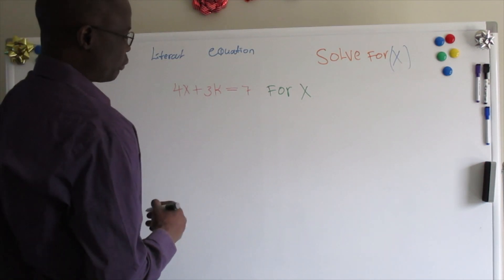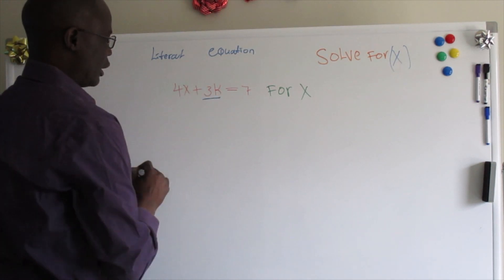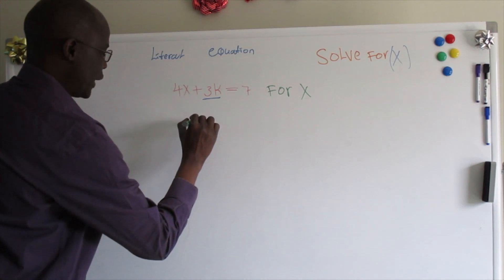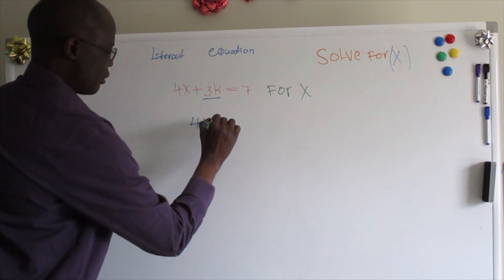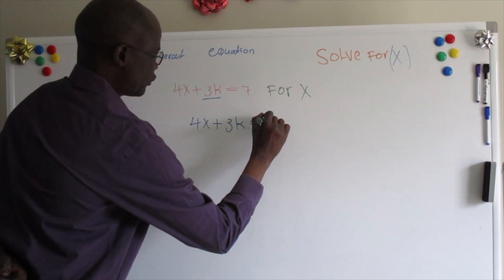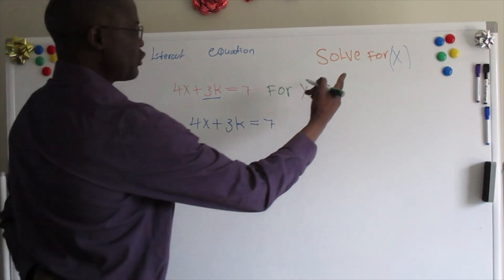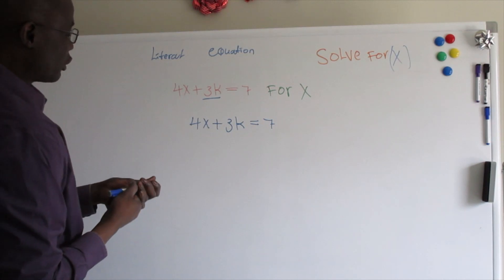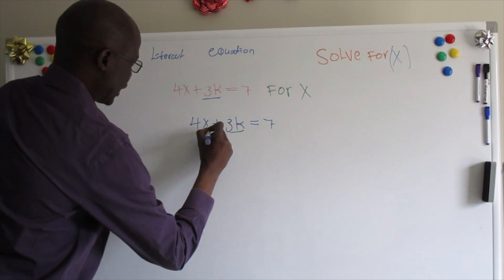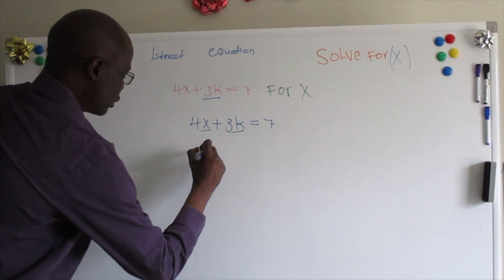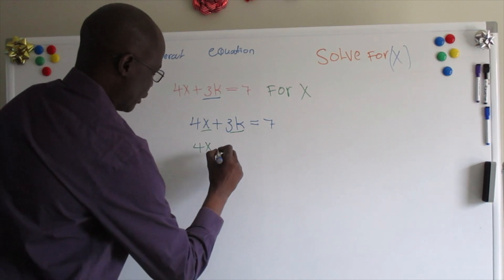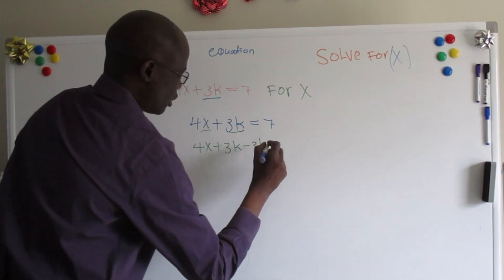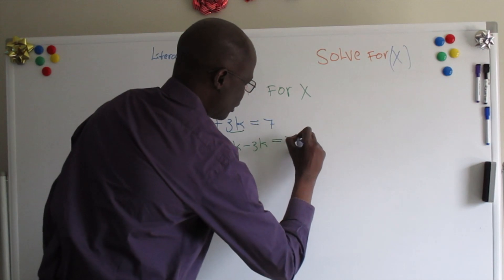The first thing we're going to do is subtract 3k from both sides of the equation. I'm going to rewrite the equation as it should look like. We have 4x plus 3k equals 7. The first thing we're going to do is subtract 3k from both sides: 4x plus 3k minus 3k equals 7 minus 3k.